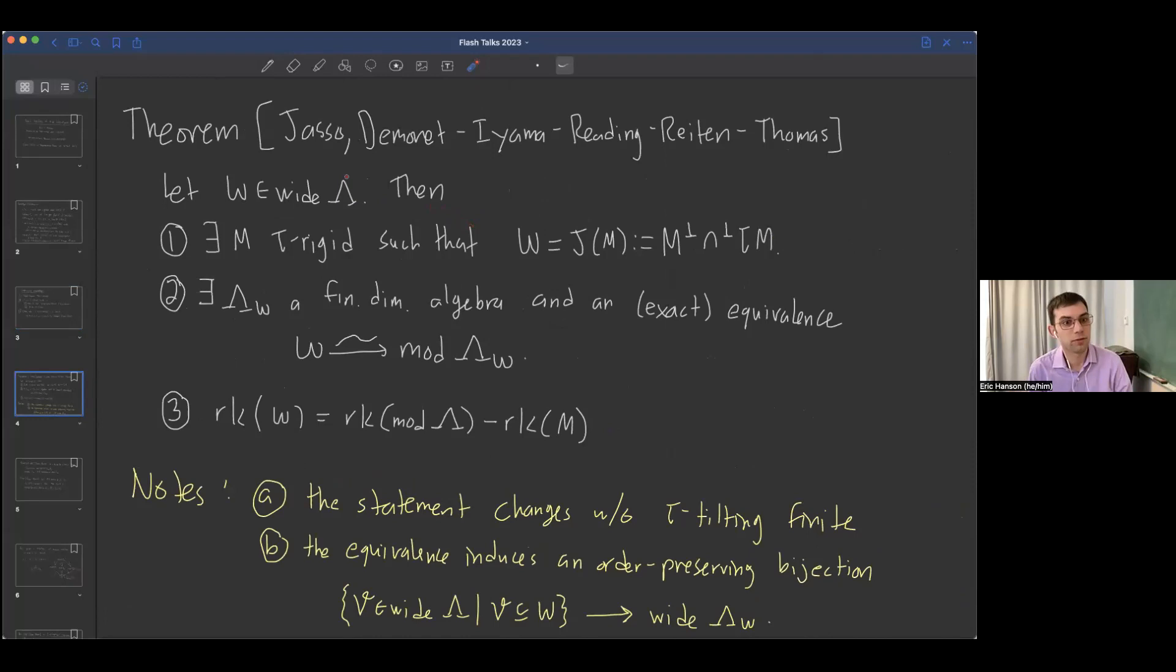A theorem from Jasso and also Demonet-Iyama reading Wrightson and Thomas is that given a wide subcategory, there exists some tau rigid module where we can write W as this tau perpendicular category first defined by Jasso. I use M-perp intersect perp tau M. There's no non-zero maps from M to modules in W, and no non-zero maps from modules in W to tau of M. Then there exists a finite dimensional algebra lambda W, and an exact equivalence of categories between W and the module category of this lambda W. The rank of our wide subcategory equals the rank of our algebra minus the rank of our tau rigid module M.